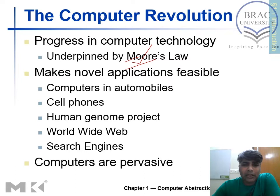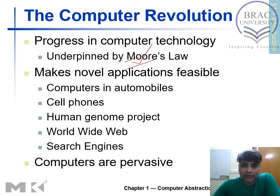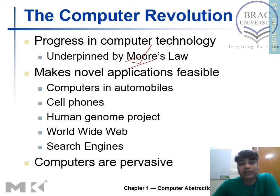Then come cell phones. We are so dependent on cell phones nowadays. The cell phone we use now compared to one from around 15 years back is much bigger and heavier, but had far fewer functionalities. The cell phone I'm using right now is probably a thousand times or more faster than my first desktop PC. This is the revolution that transistors brought to the cell phone domain.